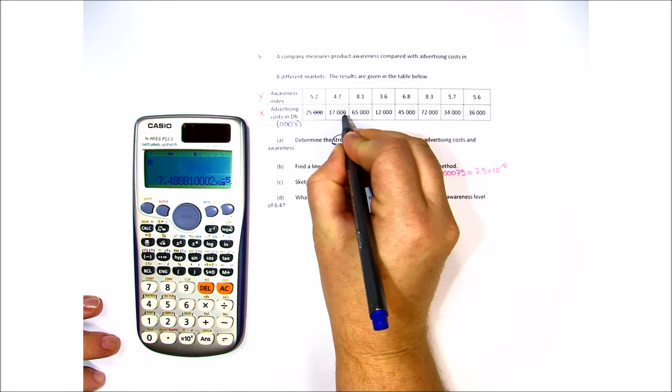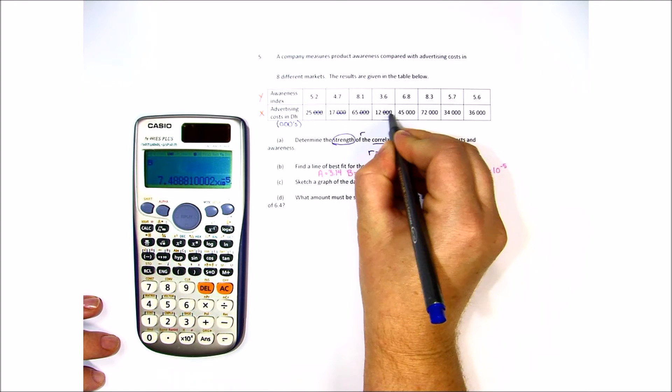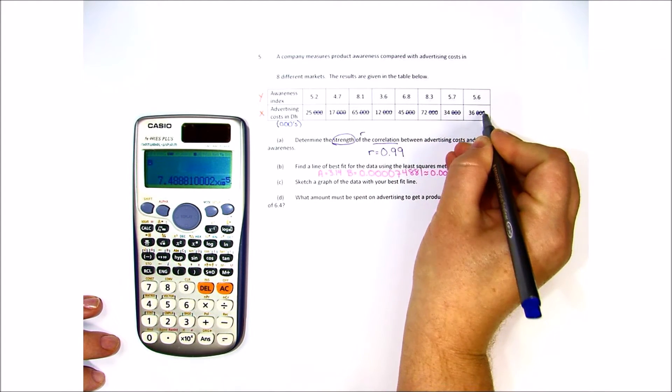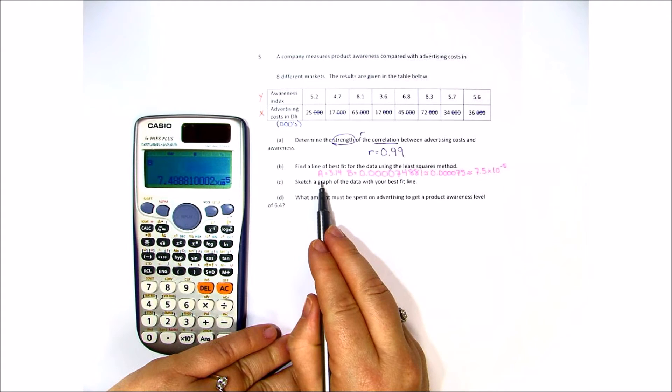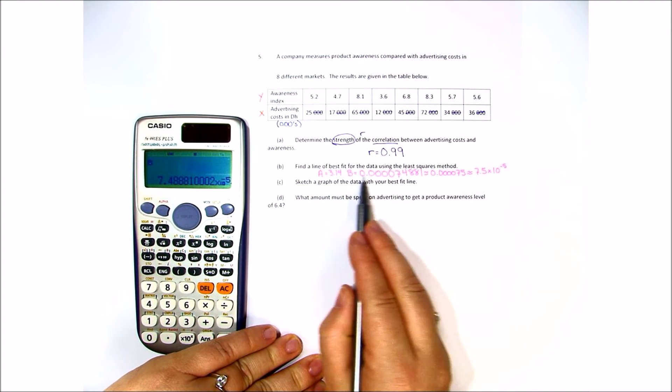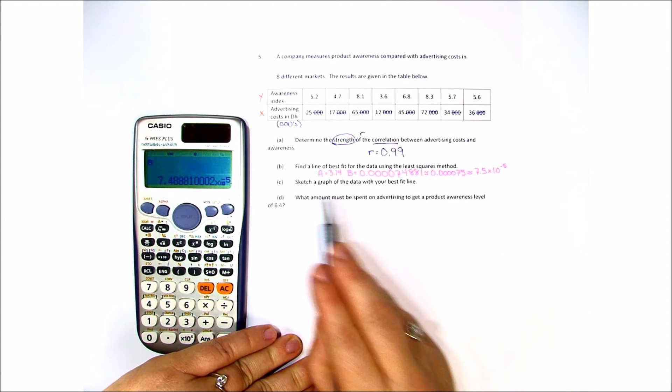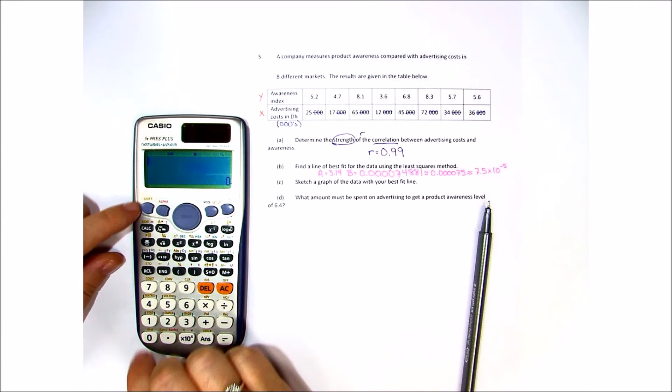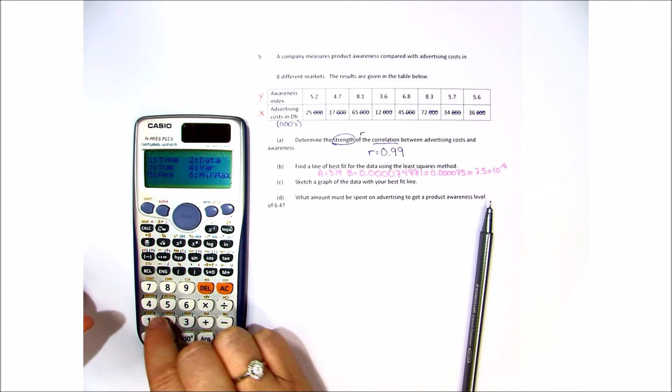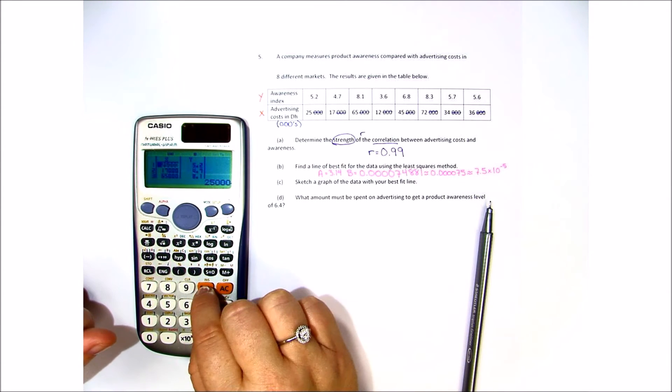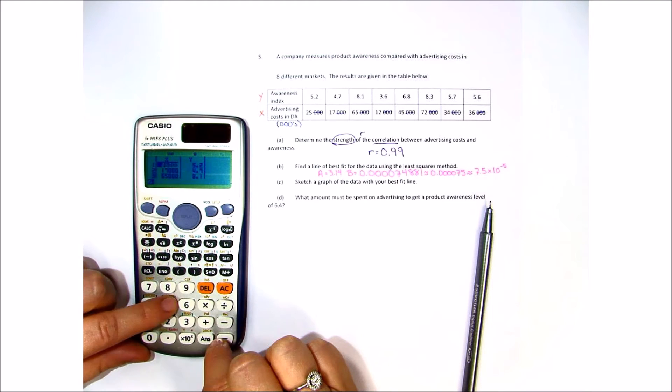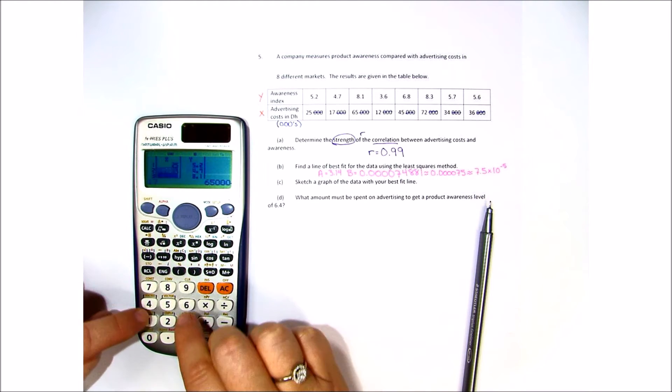And then just say that it's going to be in thousands, and we can mark off each of these from the numbers. Now this is really important because this will change what my b is. Let's see what happens if it changes a as well. So let's go ahead and do this. Shift 1, we're going to go into our data and we're going to change it: 25, 17, 65, 12, 45, 72, 34, and 36.